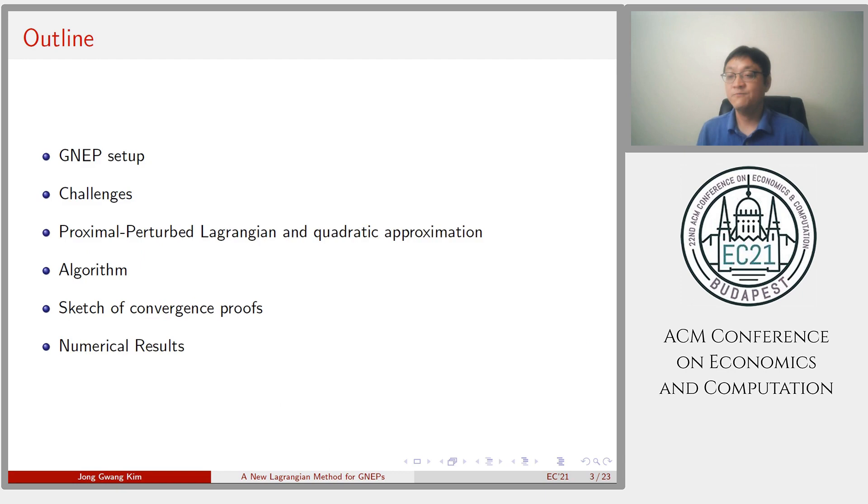Here is the outline. I first set up the GNEP model and describe theoretical computation challenges. Then I introduce a new Lagrangian with a quadratic approximation to overcome these challenges. After that, I present an algorithm and a sketch convergence proofs. Finally, I will provide numerical results on examples to show how well the method works on the GNEP.